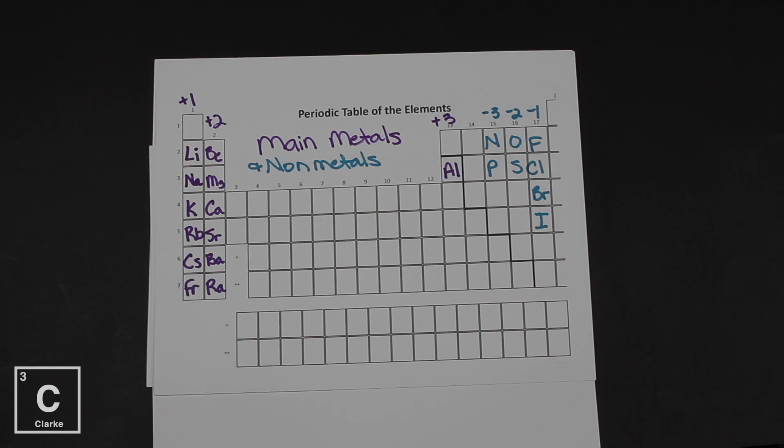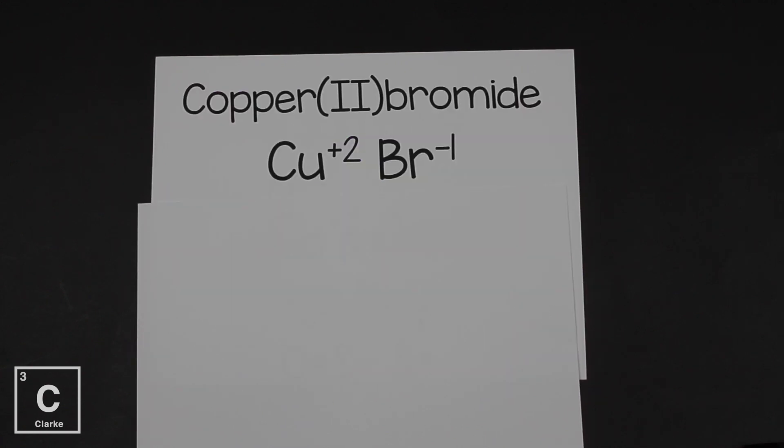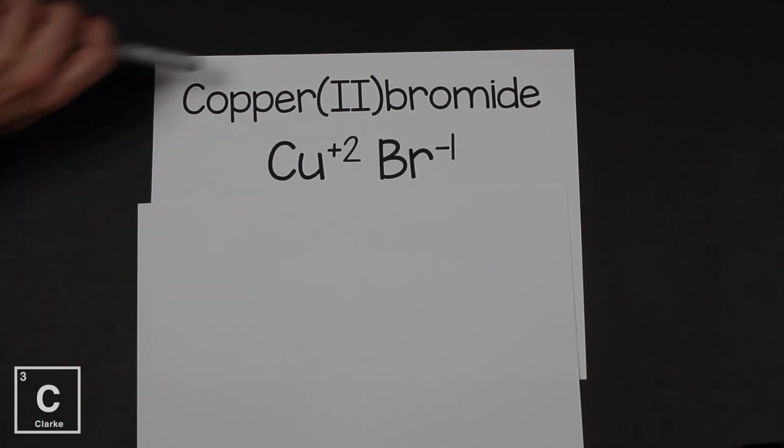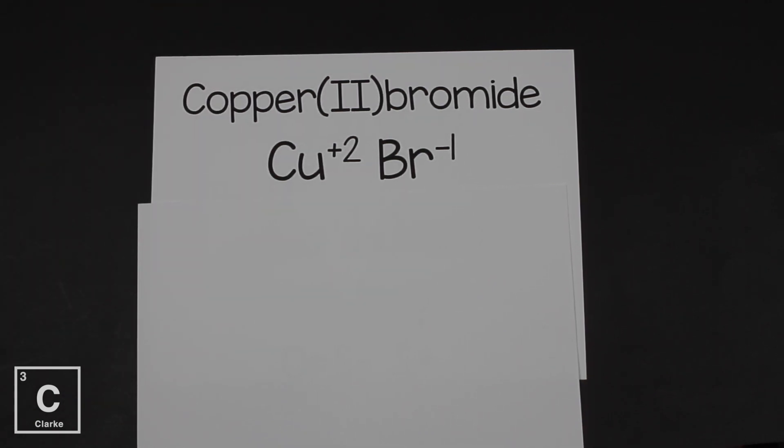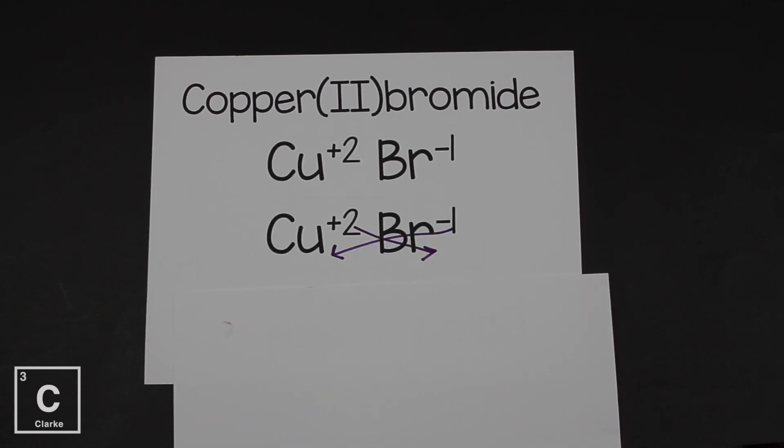Bromine, that's a halogen. It's going to be negative one. So if we write that, we've got Cu, copper, which is a plus two because of the roman numeral. Bromine is a negative one because it's a halogen. And remember, we want to crisscross those numbers and ignore the sign.